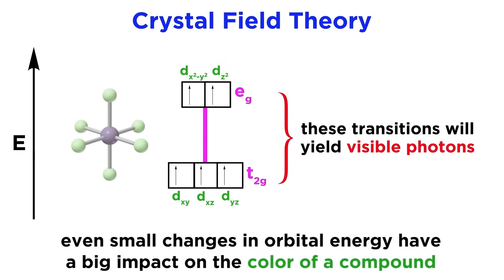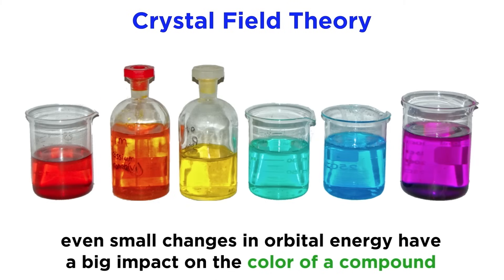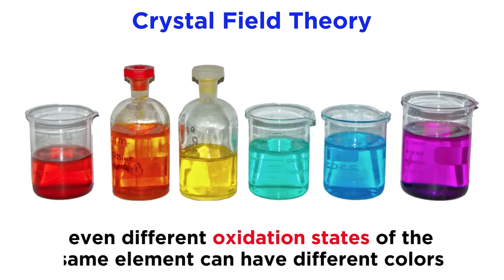Even small changes in orbital energy can have a significant impact on the color of the compound, as is seen here, with different transition metal ions exhibiting totally different colors. And this is not just for different elements, we can look at two different oxidation states for the same element, and they may have different colors.